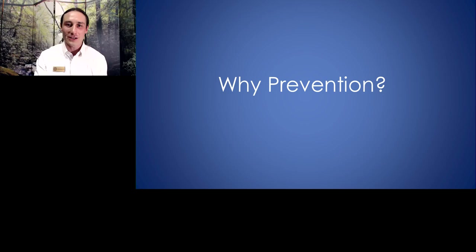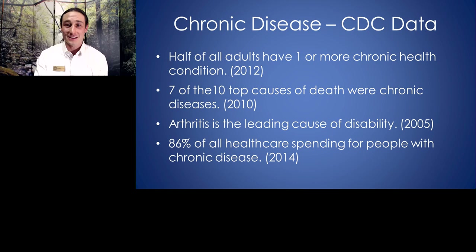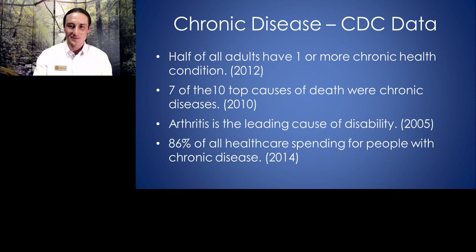But before sleep, a quick note about chronic disease. This data from the CDC shows that half of all adults in the United States have one or more chronic health conditions, and seven of the top ten causes of death are chronic diseases. Arthritis is the leading cause of disability, and 86% of all healthcare spending is for people with chronic disease. Imagine if we could chip away at chronic disease — not only manage it but prevent it — freeing up resources and preventing enormous suffering.